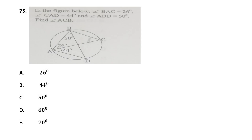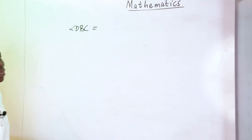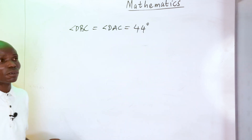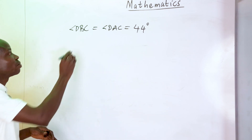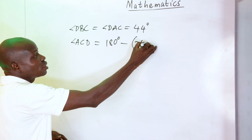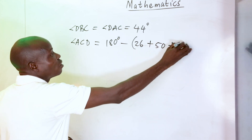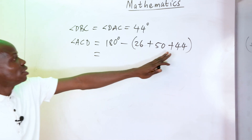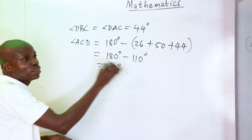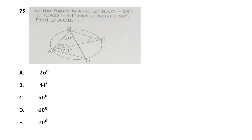Number 75: find angle ACB. Angle DBC equals angle DAC (angles in the same segment), which is 44 degrees. Then angle ACB equals 180 minus (26 plus 50 plus 44), giving 180 minus 120 degrees, which equals 70 degrees. The correct option is E.